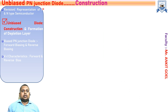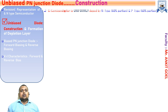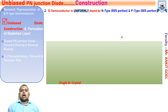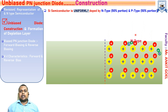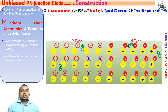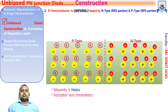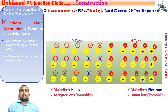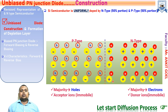Let us discuss the construction of the unbiased P-N junction diode. Unbiased P-N junction diode means when there is no external voltage applied across the P-N junction diode. This is a single silicon crystal in which half of the portion is doped with N-type semiconductor and half with P-type semiconductor. In the P-type semiconductor we have holes as majority and acceptor ions, while in the N-type semiconductor we have electrons as majority charge carriers with donor ions or positively charged ions.